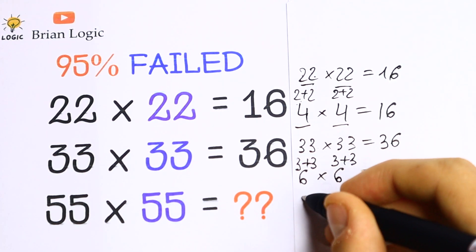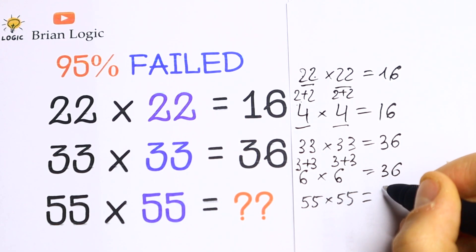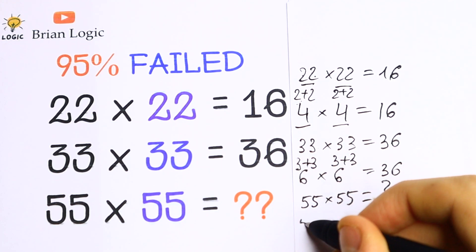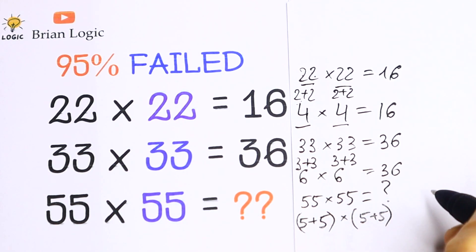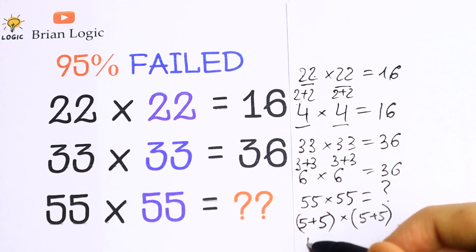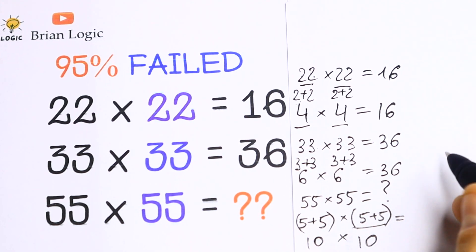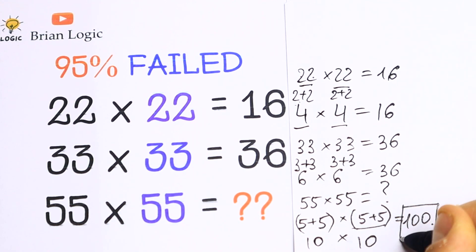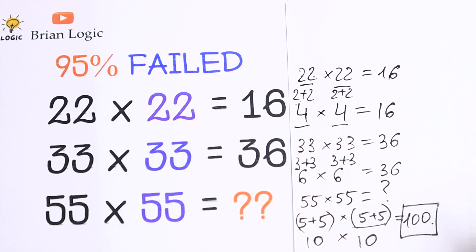So what we'll have: we have that 55 times 55 equals some number, but we found the pattern between all of these rows. We need to add these two numbers, so 5 plus 5, and we multiply this by 5 plus 5. As you can see, 5 plus 5 will be 10, we multiply by 10, and as a result we will have 100.